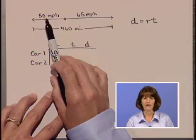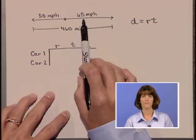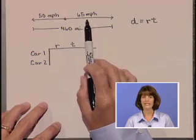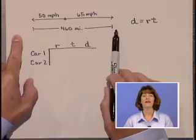One travels at 50 miles per hour, the other at 65 miles per hour, and the question is how long is it going to take for them to be a total of 460 miles apart?